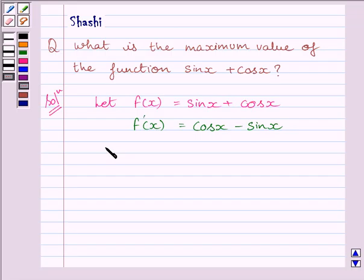Now to find the critical value of x, we will put f'(x) equal to 0. This implies cos x minus sin x is equal to 0.